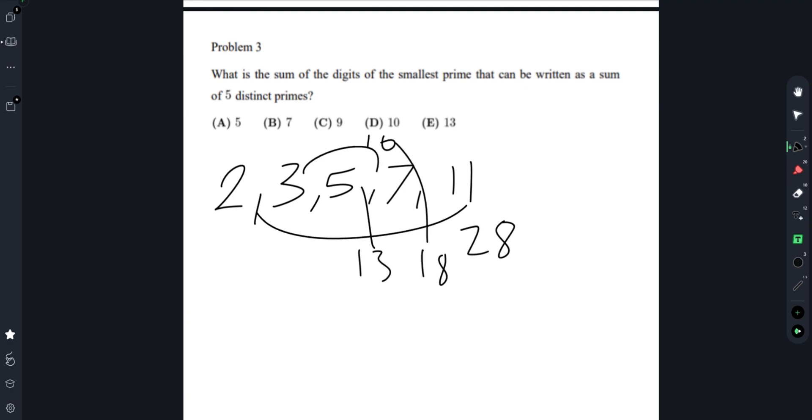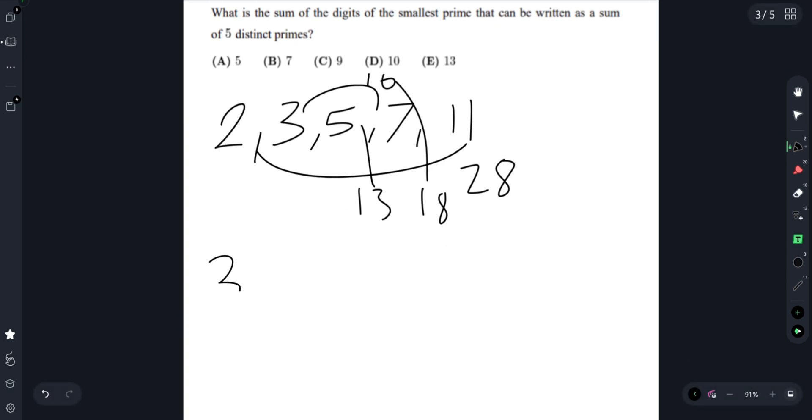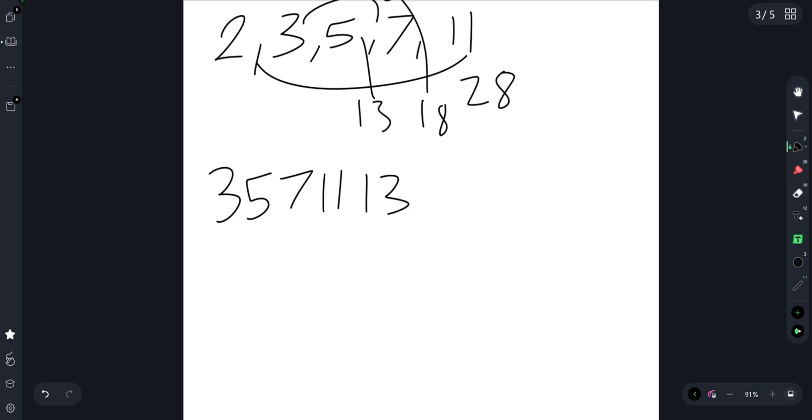So I'm going to try the next smallest ones: 3, 5, 7, 11, 13. 7 plus 13 is 20, plus 8 is 28, plus 11 is 39, which is not prime.